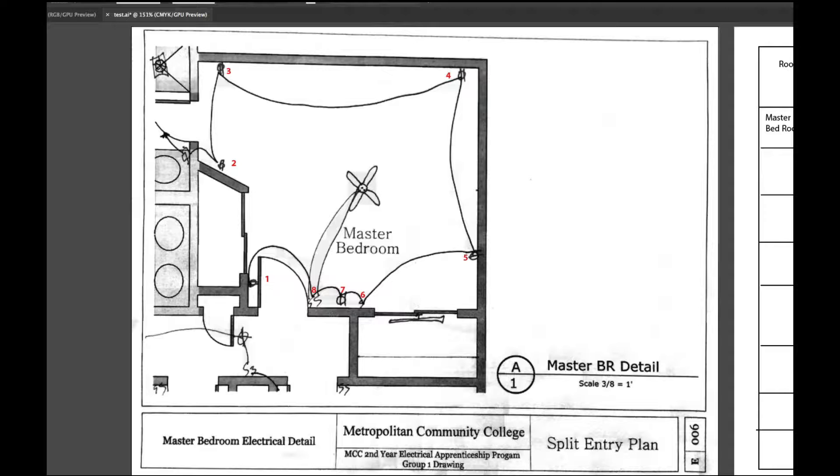So if we look at, you can see here's box one, two, three, four, five, six, seven, and eight. But what I want to do is figure out what size box it is and how many wires are coming into it so we can figure box fill, as well as what device is in it.